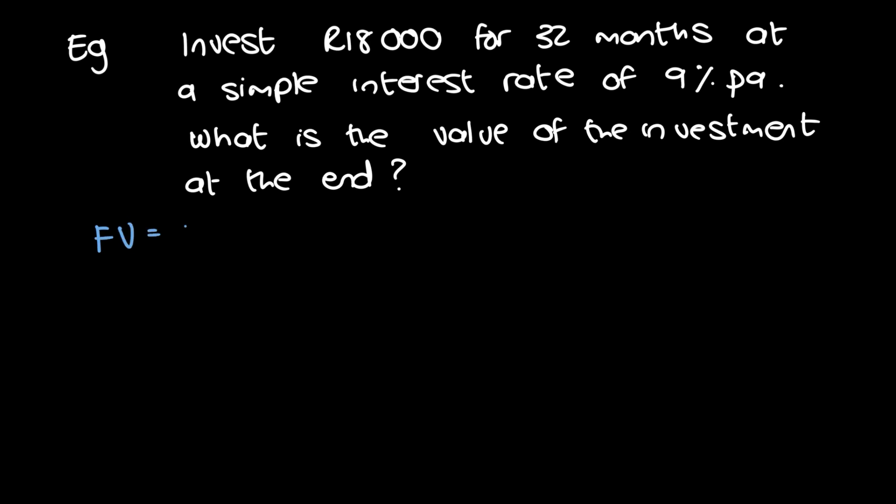Okay. And this is a new example. And this example is actually going to discuss the situation where I said we have to check that the time periods and the interest coincide. So this one is invest 18,000 for 32 months at a simple interest rate of 9% per annum. What is the value of the investment at the end? So again, it's simple interest. So again, we have the formula FV is equal to PV times 1 plus i times n. And again, we are trying to find the value of the investment at the end so the formula is exactly in the correct way with the future value being the subject of the formula.